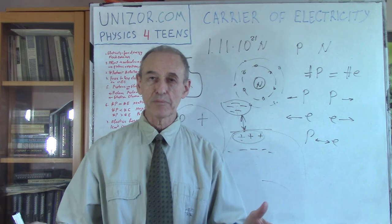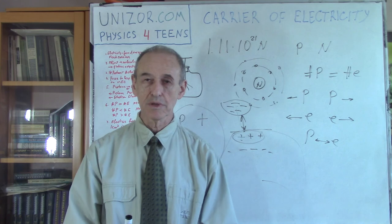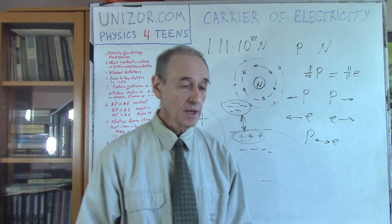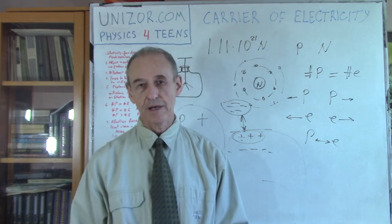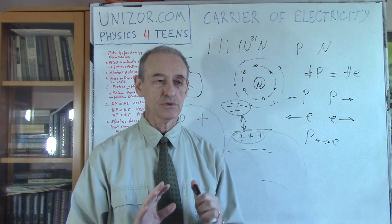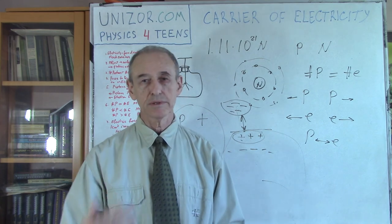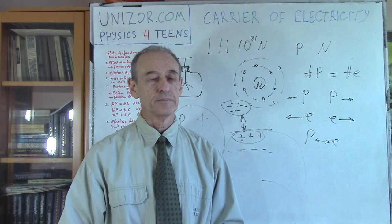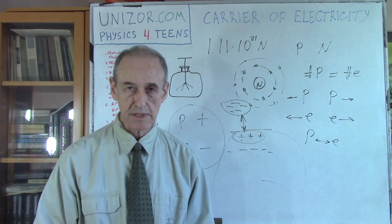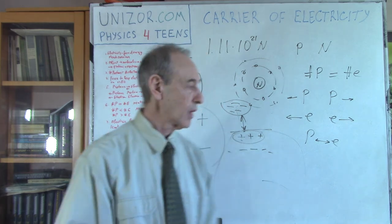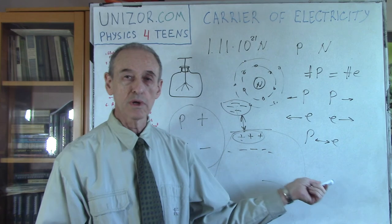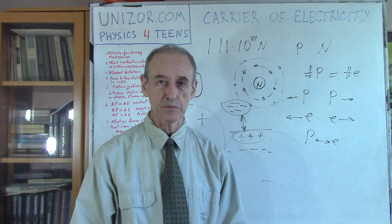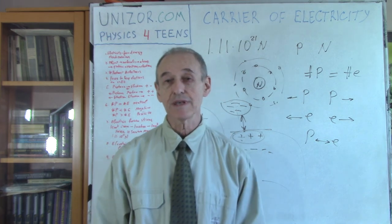This is a very introductory lecture about electricity. I just wanted to cover electrons, positive charge, negative charge, protons, electrons, excess of electrons, deficiency of electrons — that's basically all. If you look at the notes for this lecture on Unizor.com, you will also see the calculation of how I came up with the force between two cubic centimeters of iron positioned at one meter from each other, in the case where we stripped all the electrons, and how strong the force is in that case. That's it for today, thank you very much, and good luck.